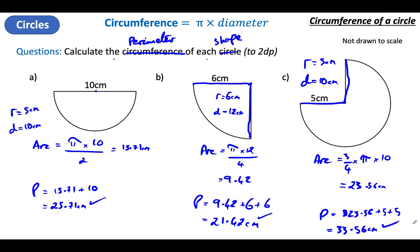If you've got all three of those, then you have done awesomely. If you've got one, you've done great. As long as you can work out the circumference with Pi times diameter, that's fabulous. I shall see you next time for some area of a circle — which will be great fun. See you next time. Thank you.